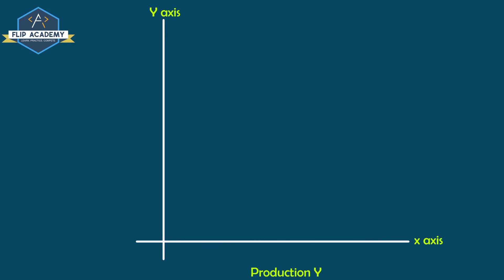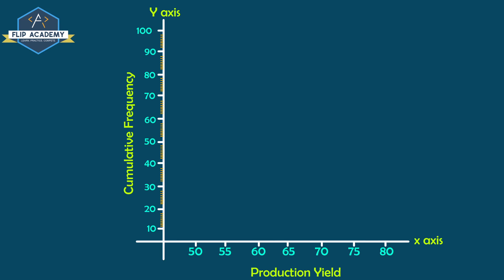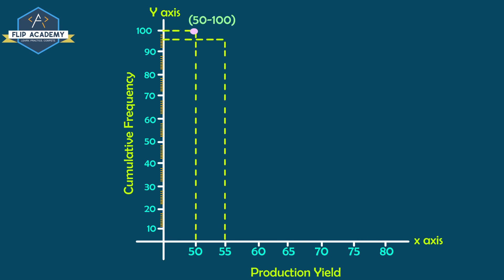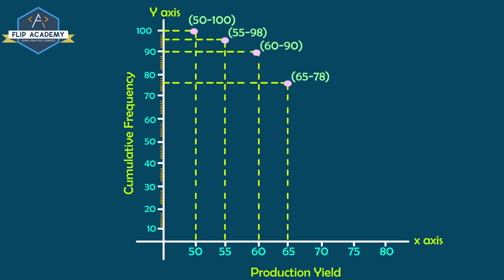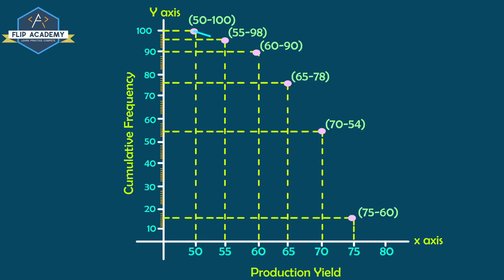On the x-axis we write production yield, and on the y-axis cumulative frequency. Plotting the points: (50, 100), (55, 98), (60, 90), (65, 78), (70, 54), (75, 16). Joining all these points gives the required ogive. Question number 3 is complete.